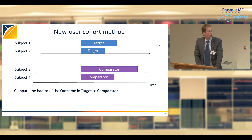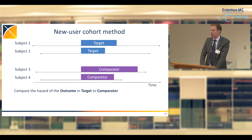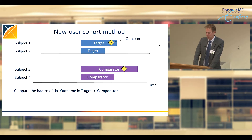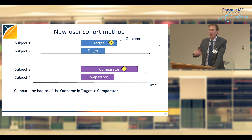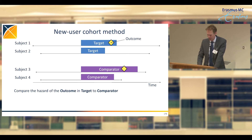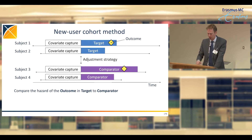The new user cohort method is a simple design where you compare two treatments. You find all people starting on the target treatment, define a comparator treatment, and ask whether the outcome of interest occurs more often or at a higher rate in the target population than the comparator. This looks very much like a randomized trial where people are randomized into two treatment arms and followed over time. But this is not a randomized trial — these people aren't randomized into treatments. Doctors have good reasons for prescribing one drug to one group versus another, meaning the two populations are likely different to begin with.